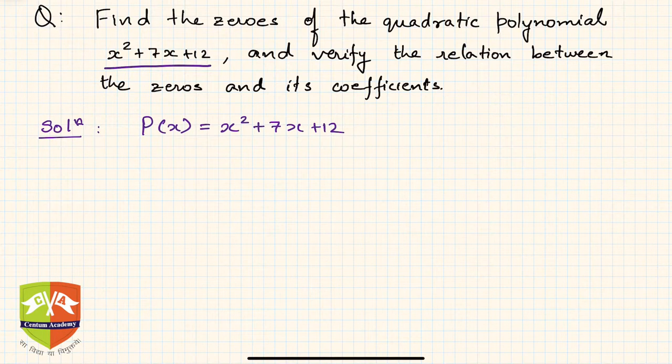First, you have to find the zeros. What is a zero of a polynomial? A zero of a polynomial is that value of x which makes the polynomial equal to zero. So P(x) will become zero for such values of x.